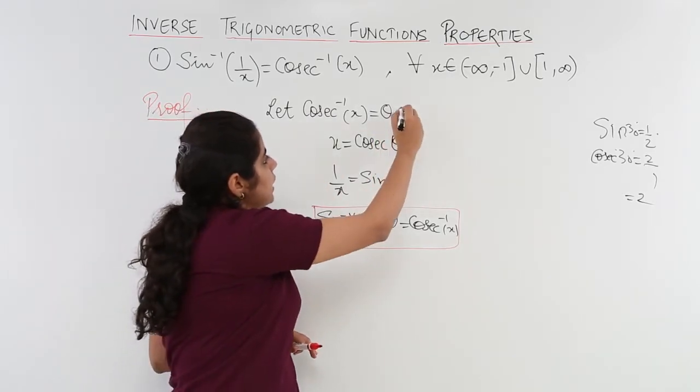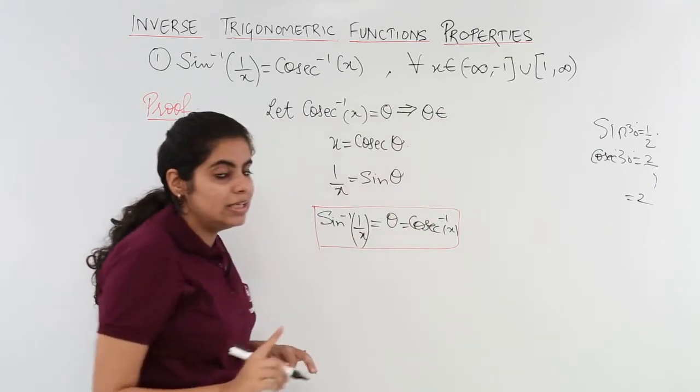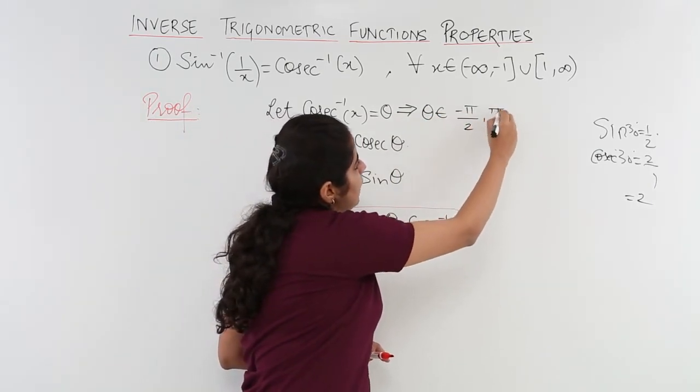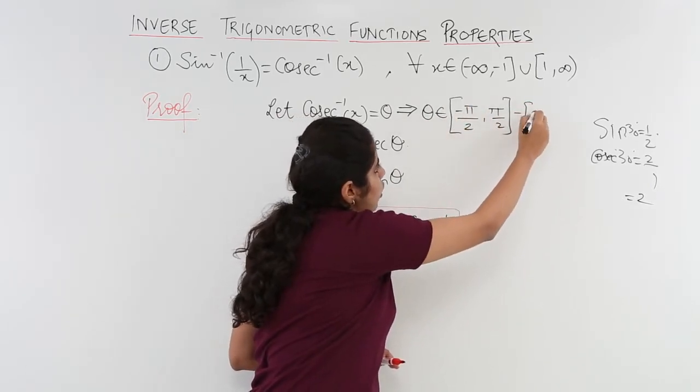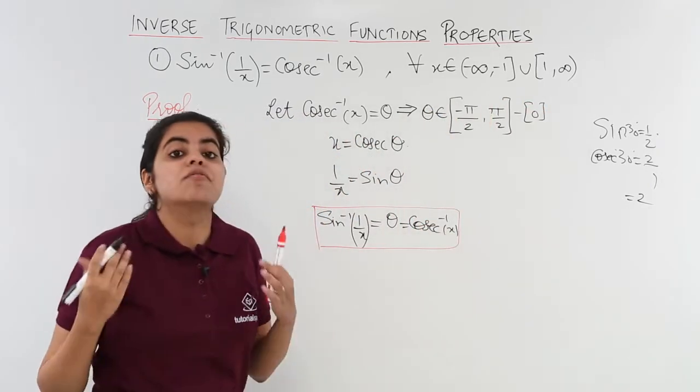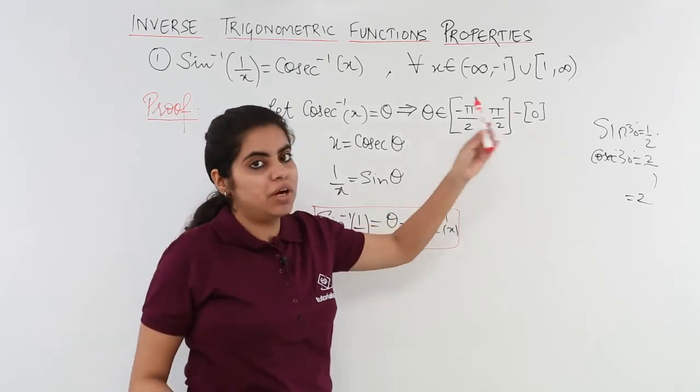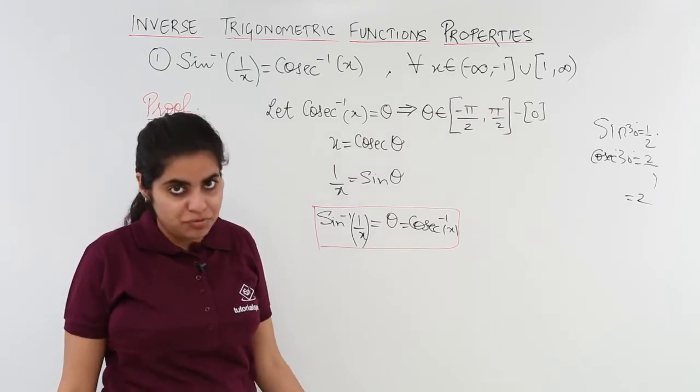So in case of cosecant inverse x is equal to theta, my theta belongs to the interval minus pi by 2 to pi by 2 both included, but I cannot include 0. Why can I not include 0? Because if 0 is included, 1 upon sin 0 will be 1 upon 0 which is not defined.